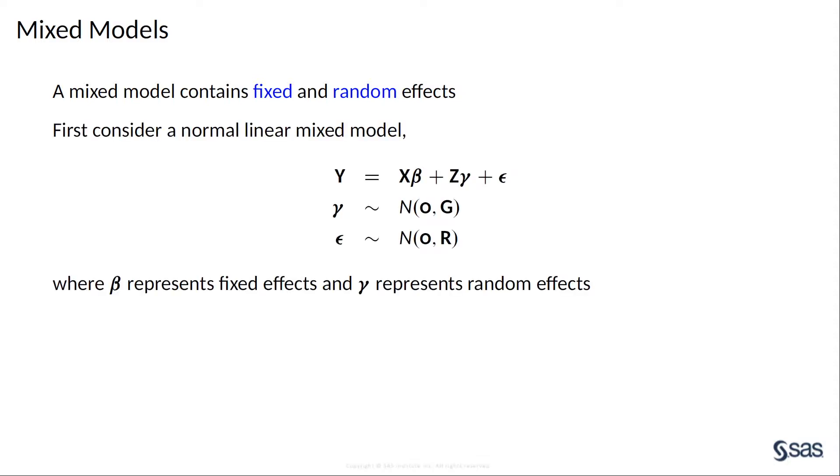Let's start with a normal linear mixed model, where the response Y is normally distributed, whose mean is X beta plus Z gamma, where beta represents fixed effects and gamma represents random effects.